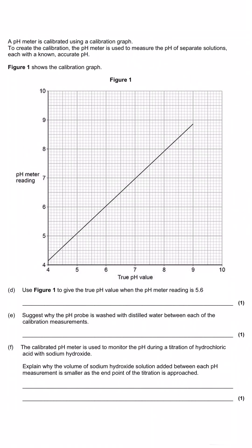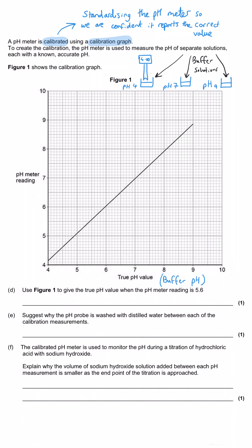A pH meter is calibrated using a calibration graph. To create this calibration, a pH meter is used to measure the pH of separate solutions, each with a known accurate pH. They would probably use a range of different buffer solutions. You would have the true pHs, that's the pHs of the buffer solution that you've used, and then you would record the value on the y-axis that your pH meter is reporting, and then you would plot this as a graph which you would expect to be a straight line. Then you would use the measured pH meter reading to determine what a true pH value is.